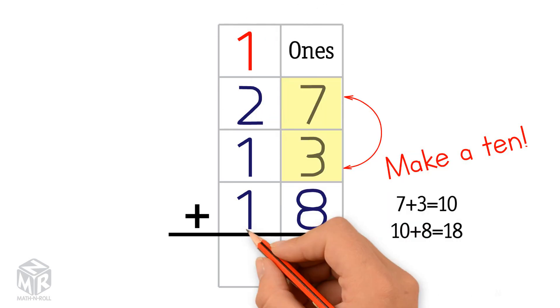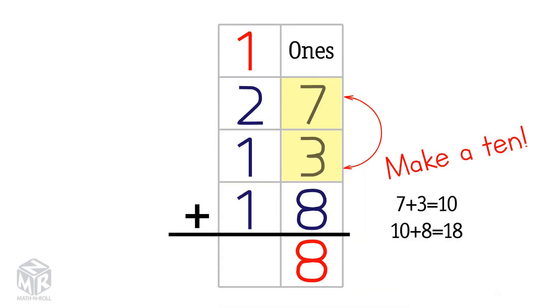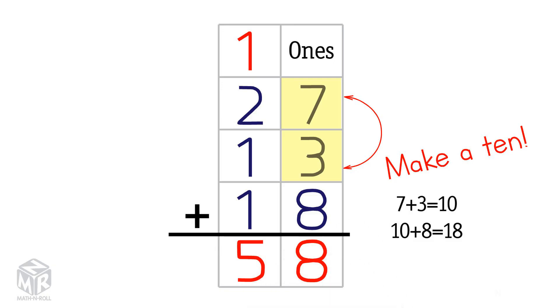Now we add the tens. 1 plus 2 plus 1 plus 1 equals 5. So 27 plus 13 plus 18 equals 58.